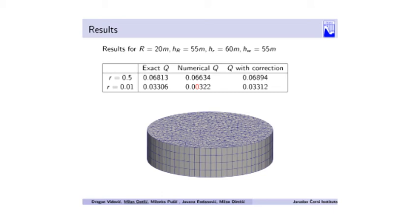But if the well radius is much smaller than the mesh size, then the obtained flux without the correction is ten times lower than it should be. With the correction, the error is less than one percent.